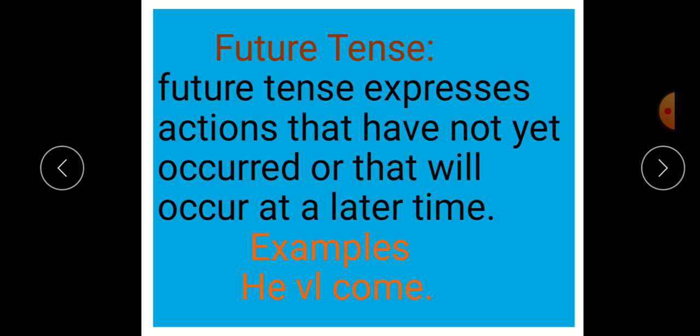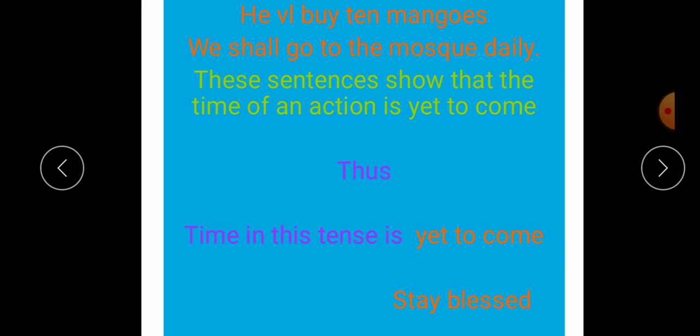In future tense, it expresses actions that have not yet occurred, jo abhi nahi hui hai. It shows an act that is going to happen in future. Wo kaam jo hone waala hai, abhi hua nahi hai, isko future tense kaha jata hai. In this way, we learn these tenses: present tense, past tense and future tense.